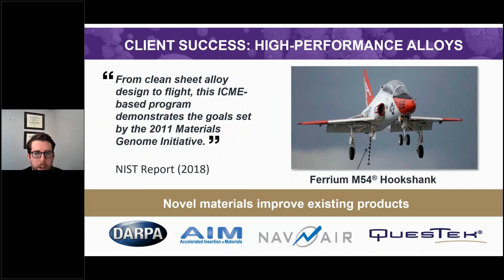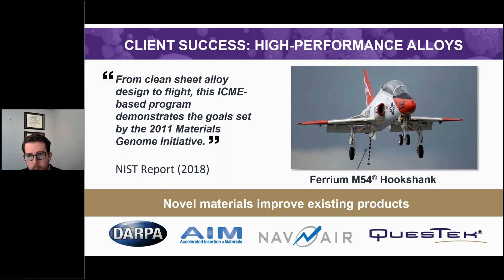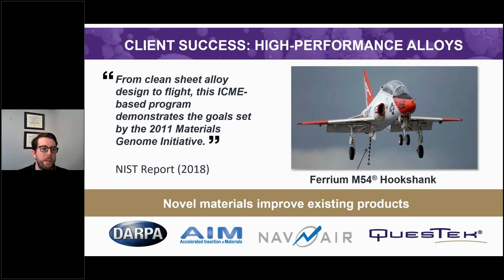We've had quite a few client successes over the years, but one good example is the development of the Therium M54 hook shank. This is a material that Questec developed clean sheet using an ICME approach and was cited in the NIST report for the Material Genome Initiative as a success in 2018. This application is for the hook shank at the back of aircraft that catches the wire to stop aircraft very quickly on aircraft carriers. Using our modeling approach, we managed to design a novel alloy that could handle these very difficult applications in about half the time of traditional experimental approaches.